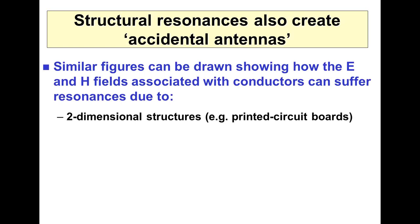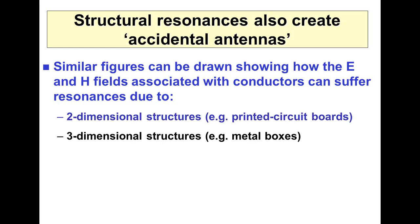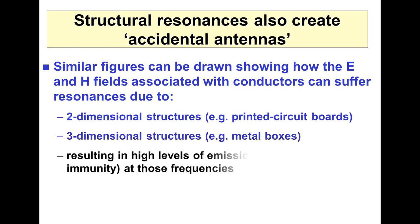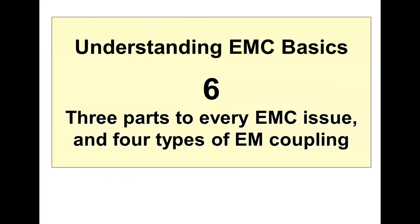We get resonances in two-dimensional structures like printed circuit boards. Even if you put a nice solid ground plane in a printed circuit board, it still resonates — that's often called a patch antenna resonance. It just flaps about like waving a blanket in the air. Three-dimensional structures like metal boxes will resonate too. So at the resonant frequencies, we get higher levels of emissions and/or poorer immunity — usually they go together at the same frequencies.